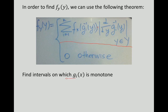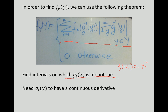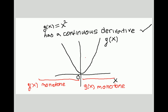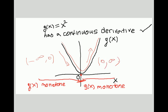We need to find intervals on which our function g is monotone. Remember that g of x equals x squared — our function looks like a parabola. We can see it is monotone decreasing on the interval from negative infinity to 0, and monotone increasing on the interval from 0 to infinity. So we have found two intervals on which the function is monotone, and it does have a continuous derivative on each.